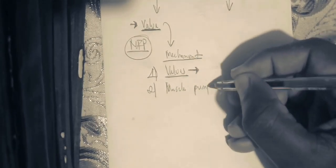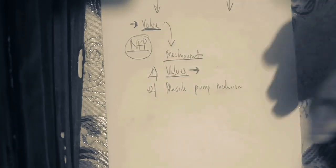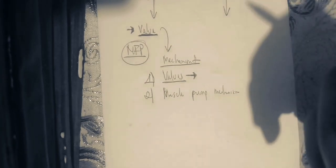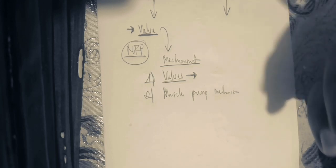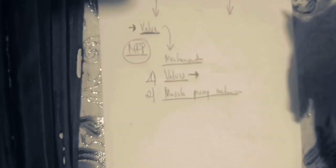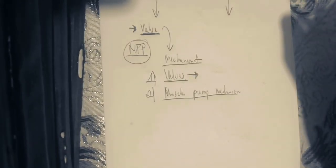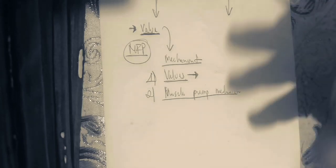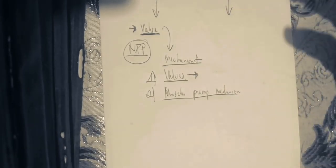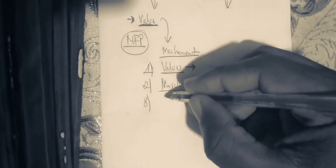The second mechanism that promotes the front flow of blood is the muscle pump mechanism. In this mechanism, when you move or have muscular contractions, you are going to have the pumping of blood from the veins into the heart in order to promote venous return.